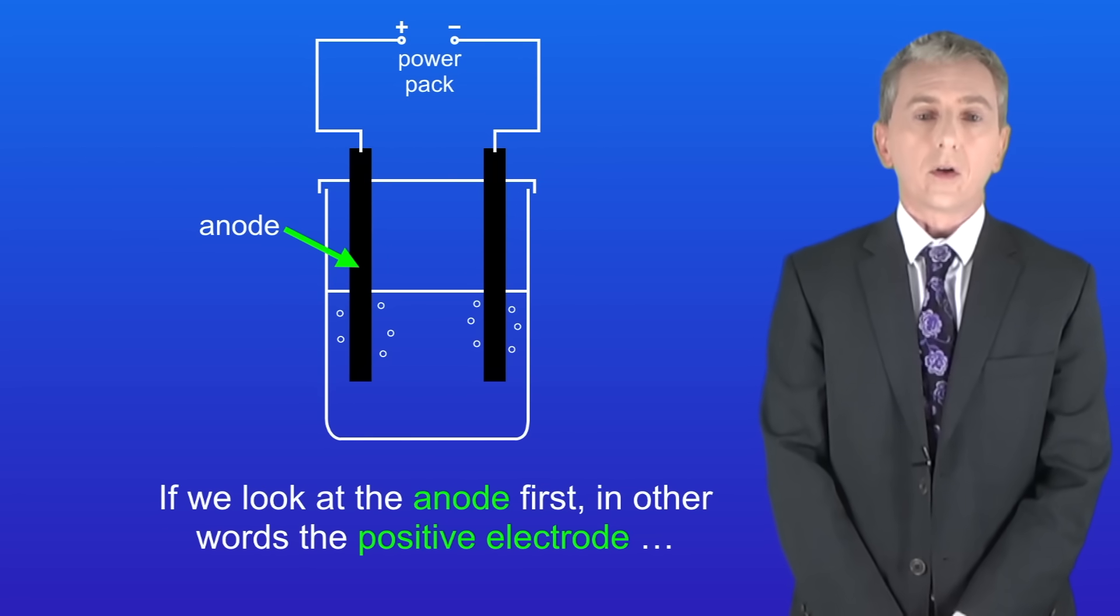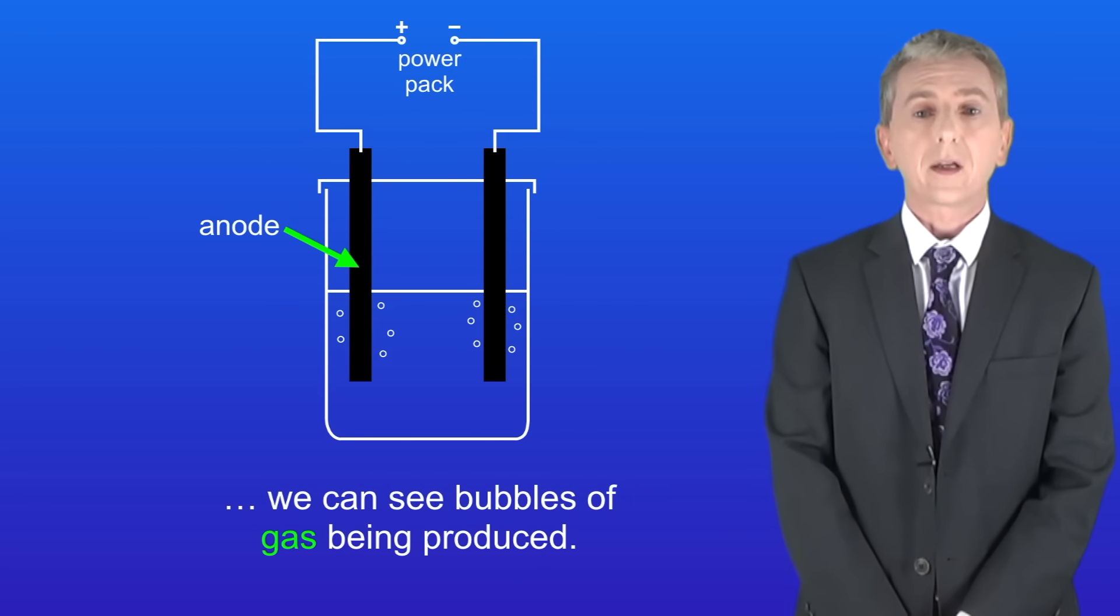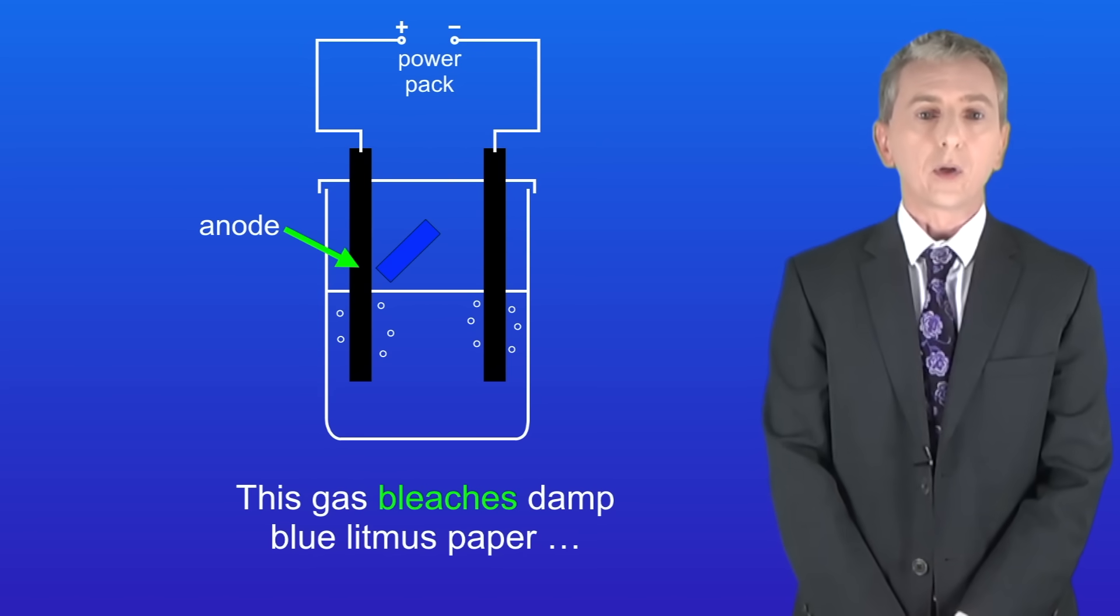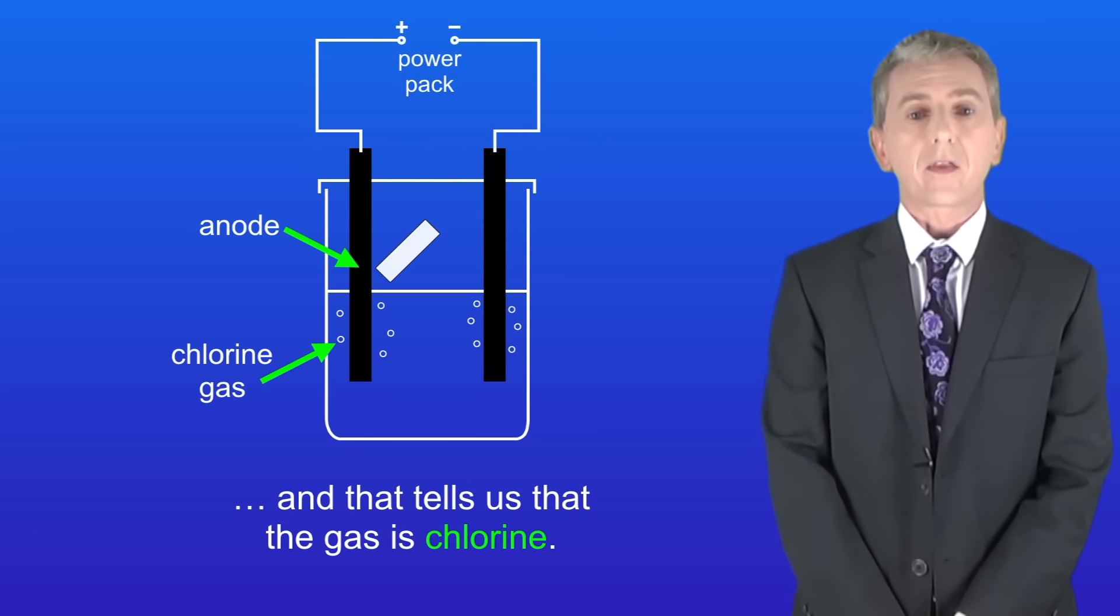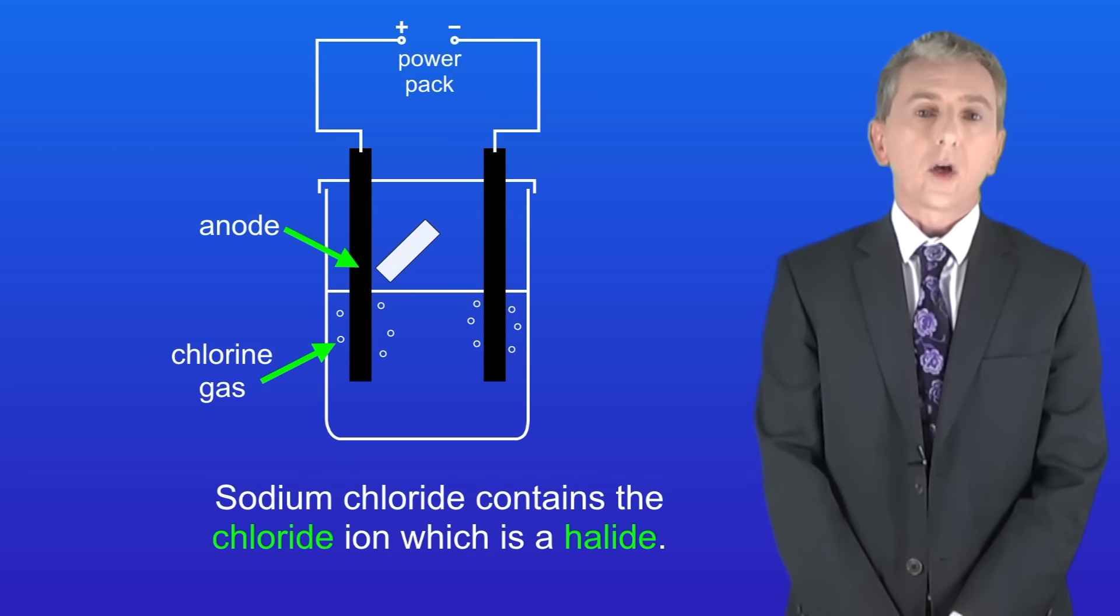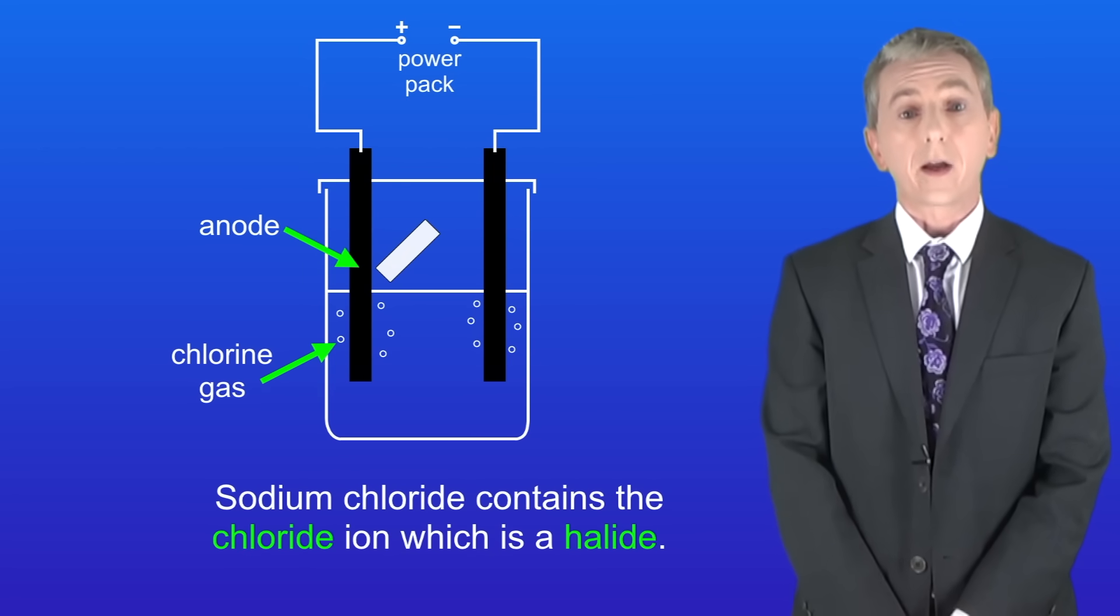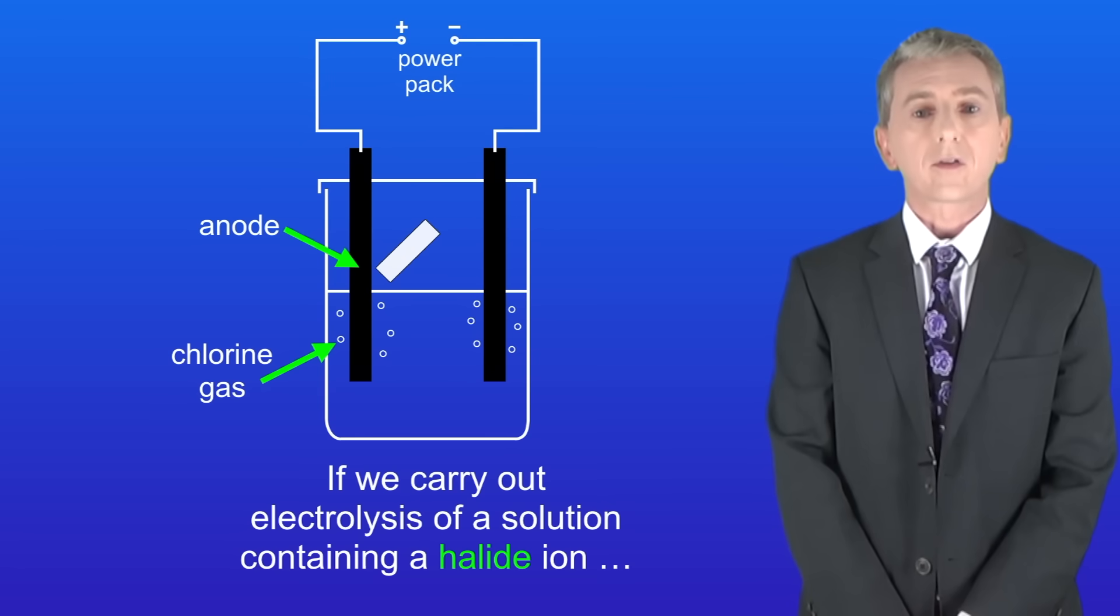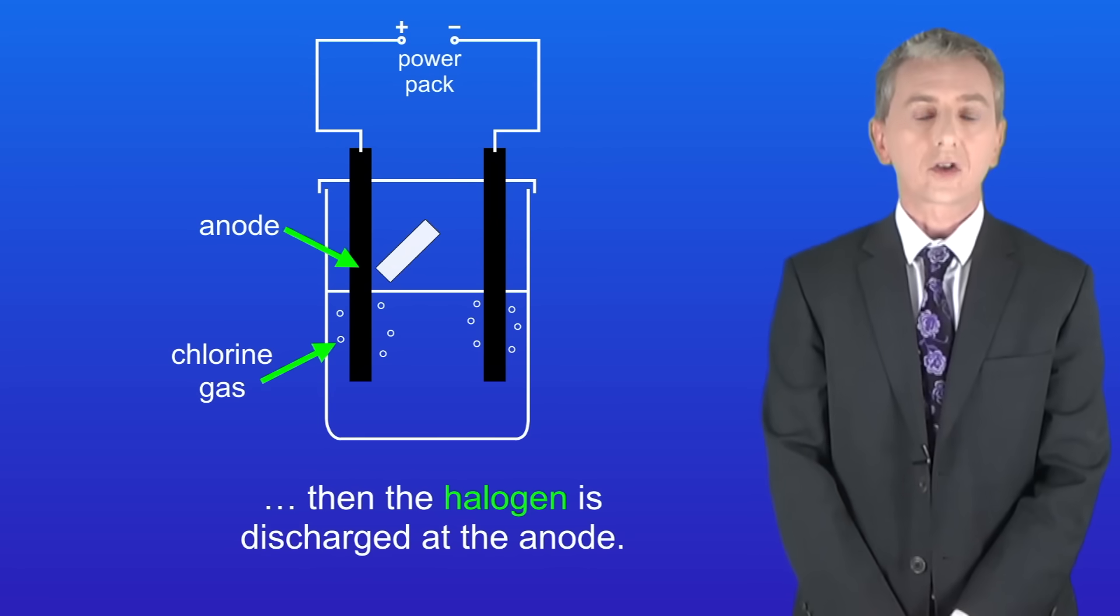If we look at the anode first, in other words the positive electrode, we can see bubbles of gas being produced. This gas bleaches damp blue litmus paper and that tells us that the gas is chlorine. Sodium chloride contains the chloride ion which is a halide. As we said before, if we carry out electrolysis of a solution containing a halide ion then the halogen is discharged at the anode.